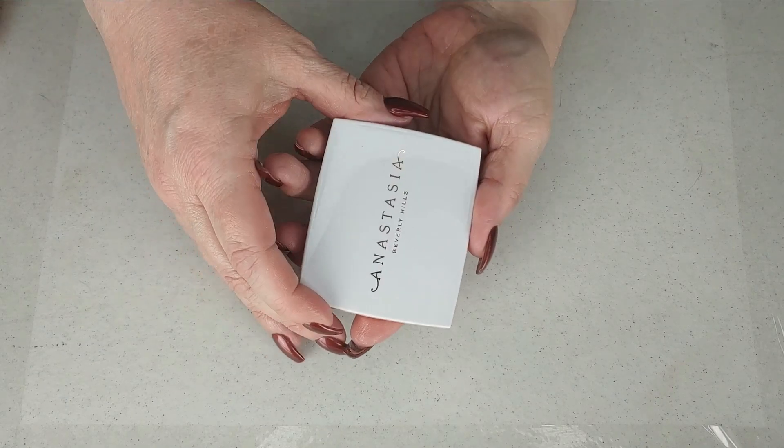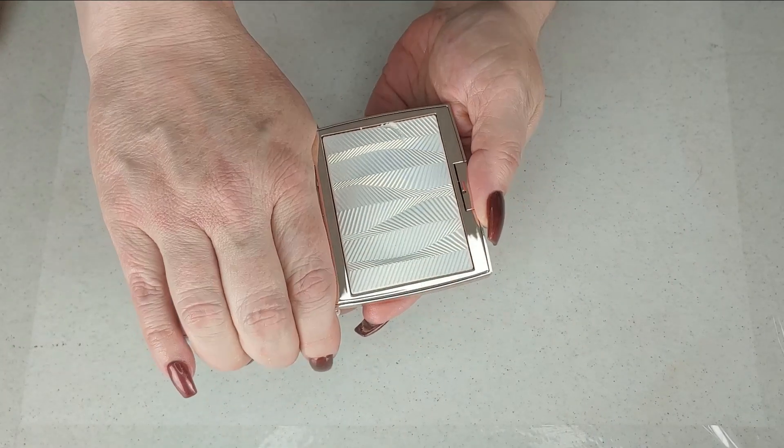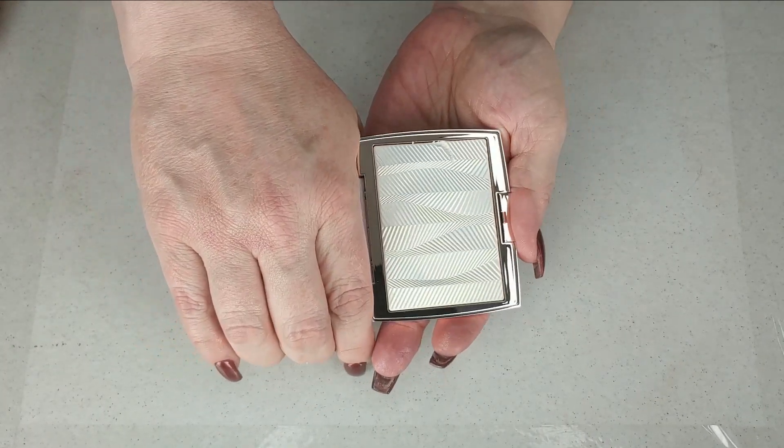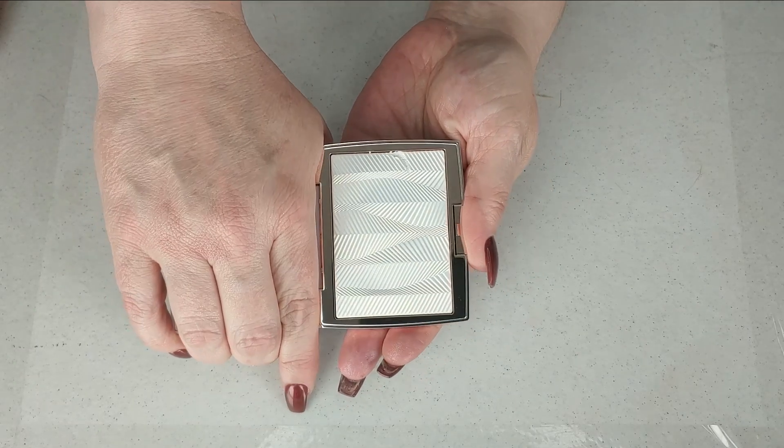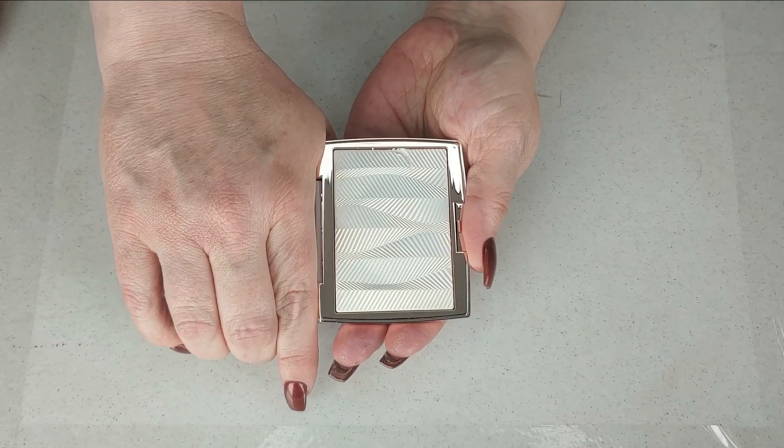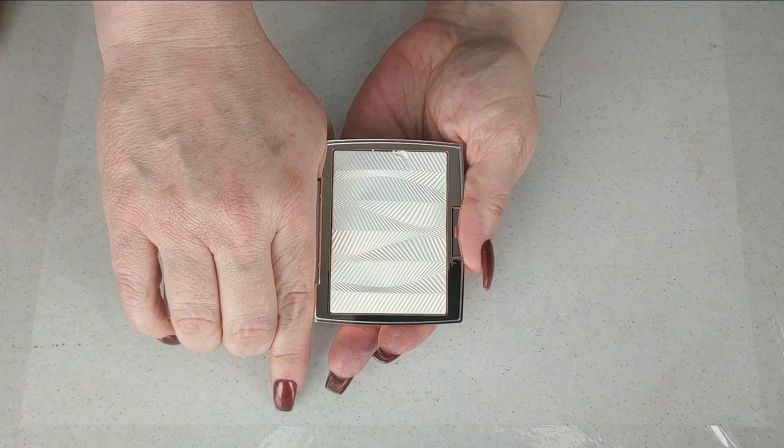And then we have this Anastasia of Beverly Hills, this is the Iced Out highlighter and oh my gosh this is stunning. My nail did go in it when I was putting it away last time. I barely used it because it's so pretty I don't want to use it but it is a gorgeous champagne type highlight.